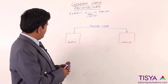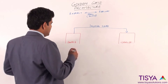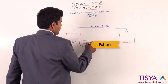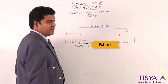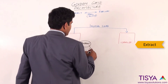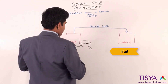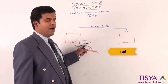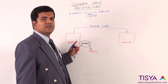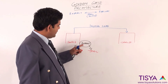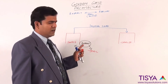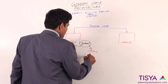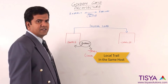Assuming an initial load is already in place, we would have to configure an extract process which will read through the transaction logs and create a trail. A trail is a file that the extract process creates after reading the source's transaction logs or redo logs. The extract process is configured to write it to a particular destination — here we are talking about a local trail, where the trail file resides within the source machine itself.